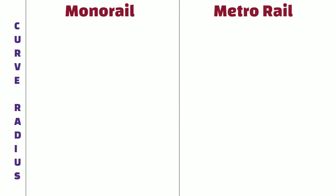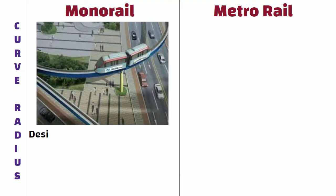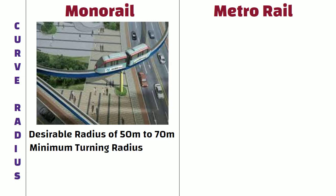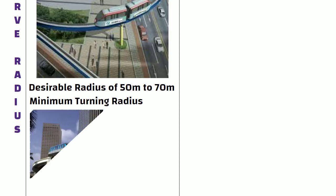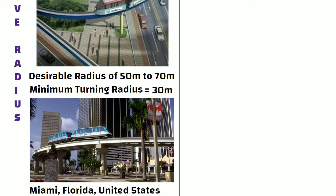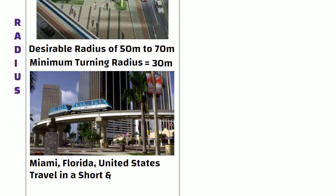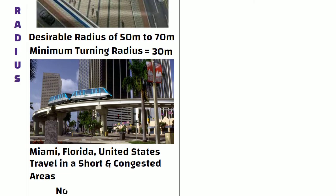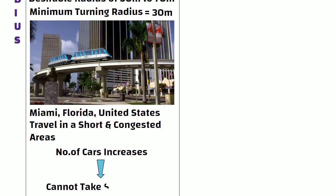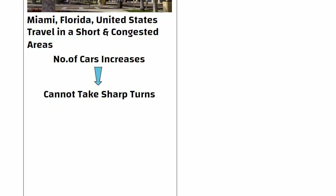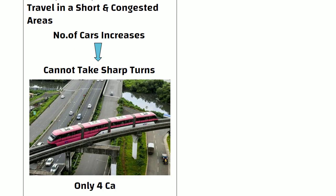Curve radius. Monorail requires a desirable radius of 50 to 70 meters. The minimum curve radius, also known as minimum turning radius, of a monorail constructed in Miami is 30 meters. This is the reason monorail can travel in short and congested areas. Please note, if the number of cars or coaches increases, then monorail cannot take sharp turns. This is the reason Mumbai monorail has only 4 cars.